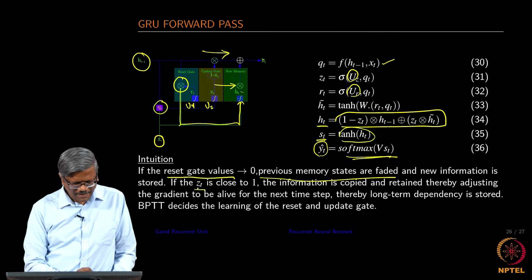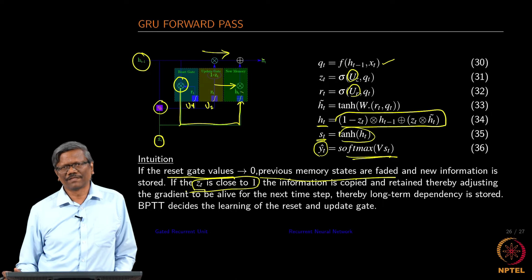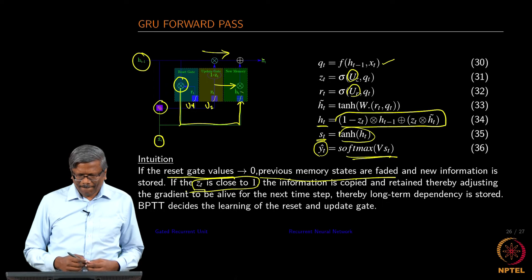When you do these operations, when z_t is close to 1, the gradients are kept alive. That means I am going to be there for the next operations as well in the forward pass.